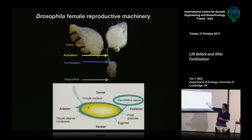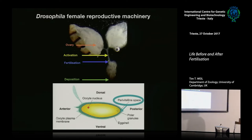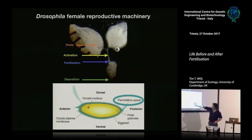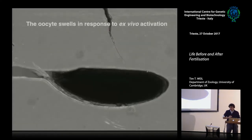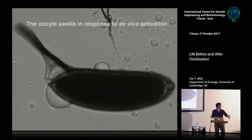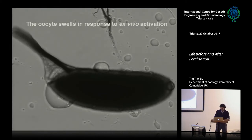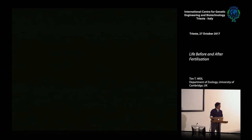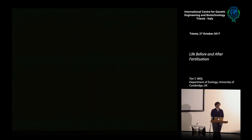The egg has a plasma membrane, then a space called the perivitelline space, then the chorion — the hard egg shell. Our lab is now thinking that the perivitelline space is what allows calcium to enter the egg. To study egg activation experimentally, we can ex vivo activate by taking out a mature egg in oil and adding activation buffer, which causes dramatic changes: the dorsal appendage stands up, there's rounding at the anterior and posterior poles, and the egg swells dramatically.